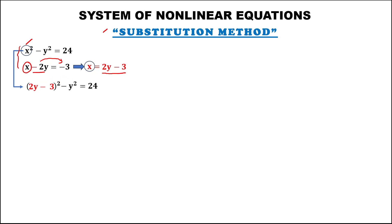To simplify, we expand the square of the binomial (2y minus 3) using the shortcut SMS method. S: square the first term — 2y times 2y equals 4y squared. M: multiply — 2 times negative 3 equals negative 6, times 2 gives negative 12y.